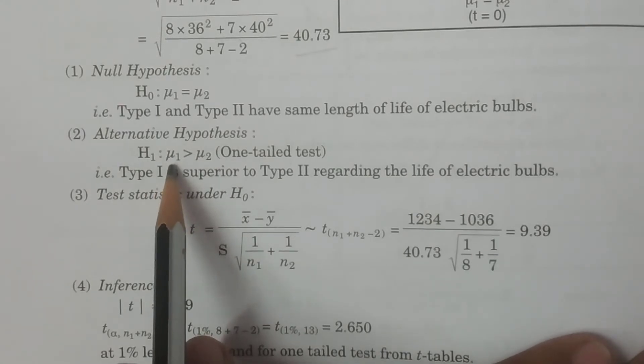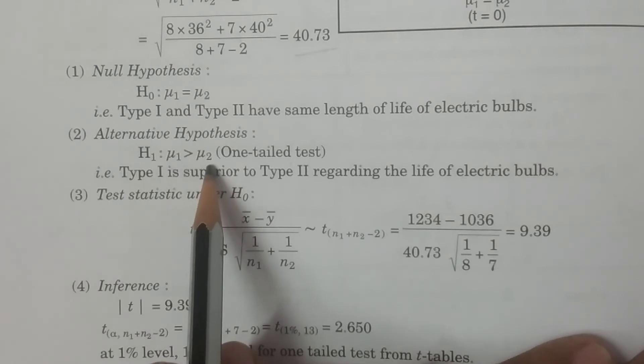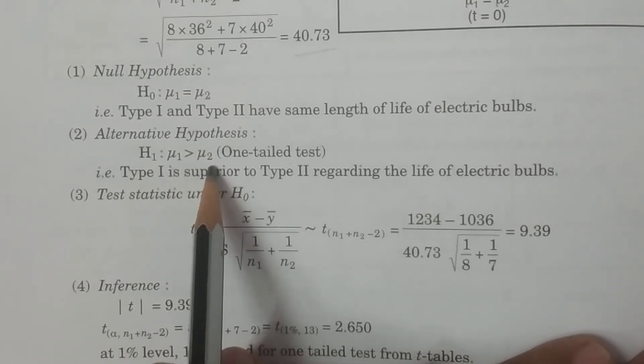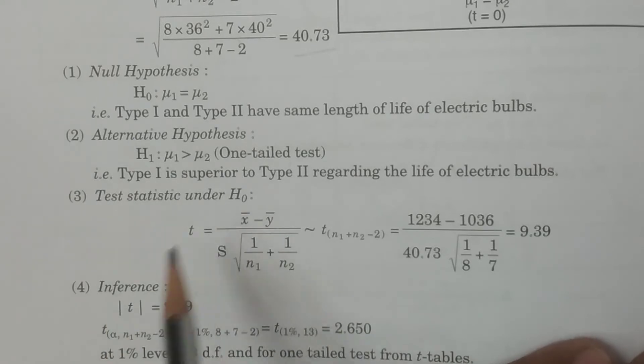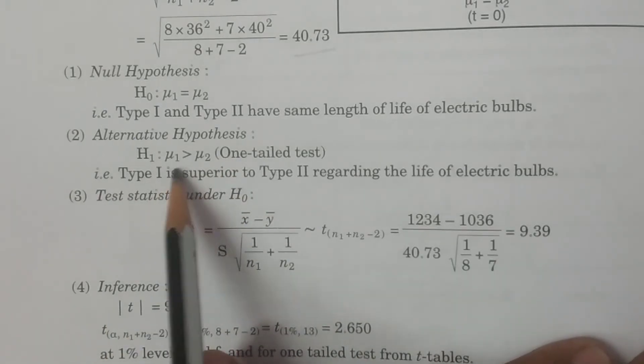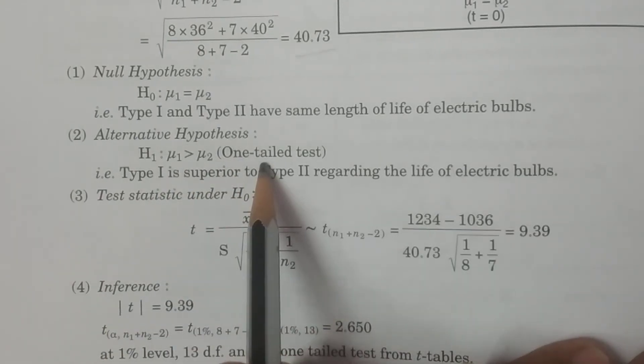Type 1 is superior, which means population first population average is more than second population average, average lifetime. Average means in the sense of lifetime. So therefore, μ1 greater than μ2, it is a one-tailed test.